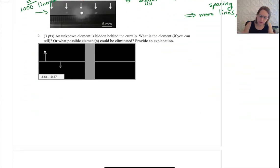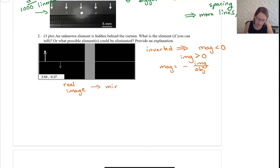To determine the type of optical element we have here, we need to first say that this is an inverted image. So inverted means that our magnification is less than zero, which means our image distance is greater than zero because magnification is equal to minus image distance over object distance. And so that means this is a real image because it's inverted, and also that the image is on the correct side of the element. So that means we've got a mirror because this is the positive side for a mirror.